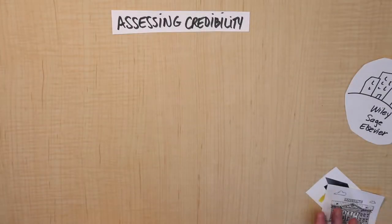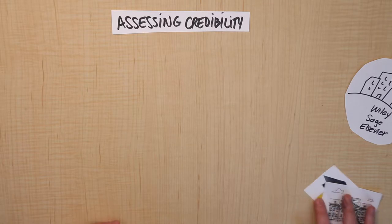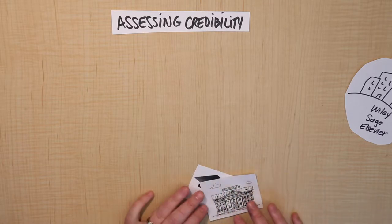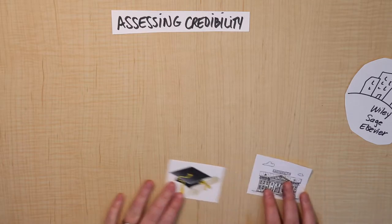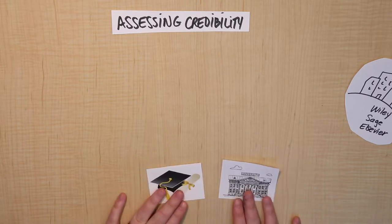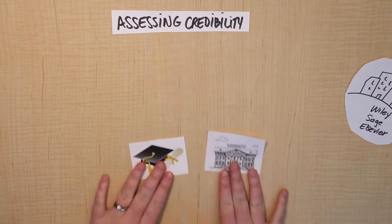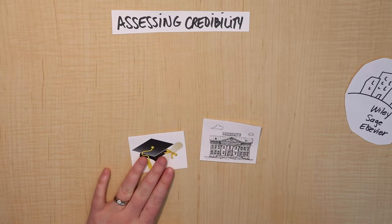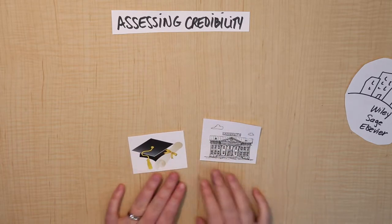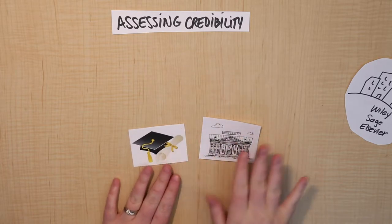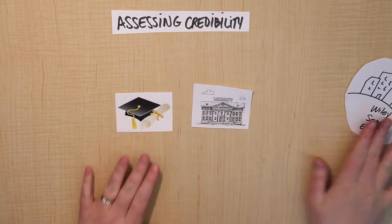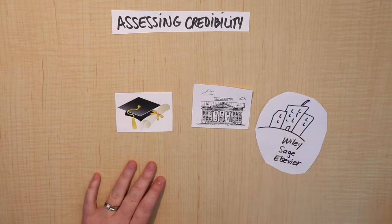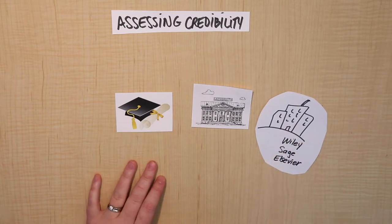Generally speaking, when you are doing research and finding peer-reviewed academic journal articles in PsychInfo, for the most part you can assume that they're fairly credible. But I'm going to tell you a little bit more about how we determine that, just in case.